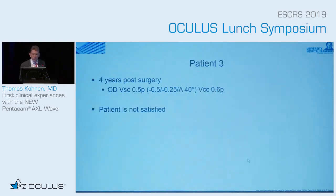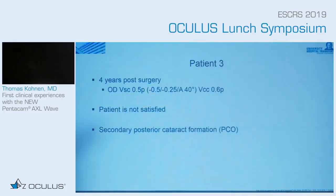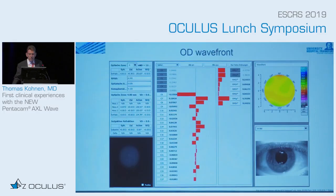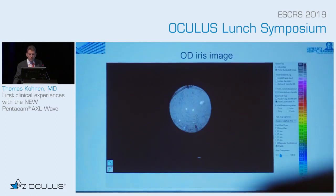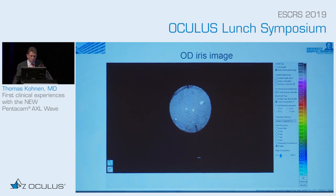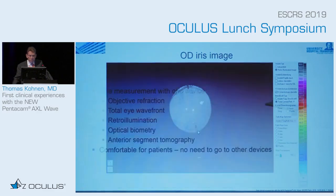The final case — only two slides — is four years post-surgery. Visual acuity was 0.5 and the patient was not satisfied. Secondary cataract formation was showing higher-order aberrations, and the retroillumination showed what the problem was: the patient had a PCO. You can see there was a toric trifocal lens in place. Of course, we performed YAG laser treatment to satisfy this patient.